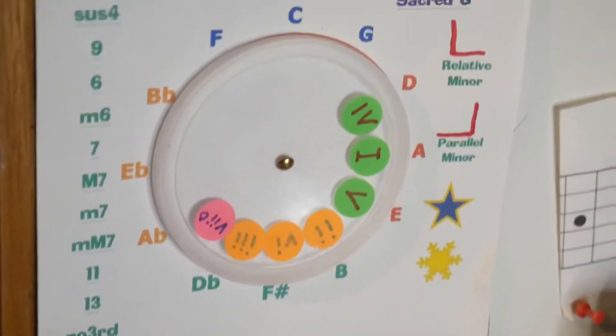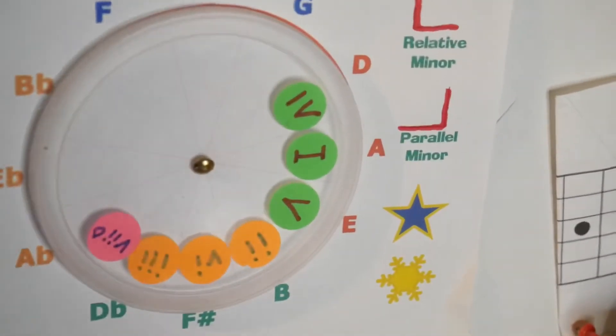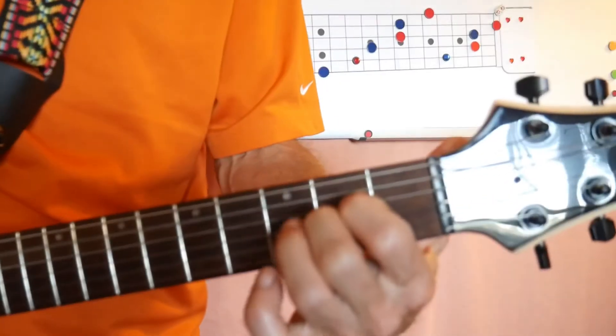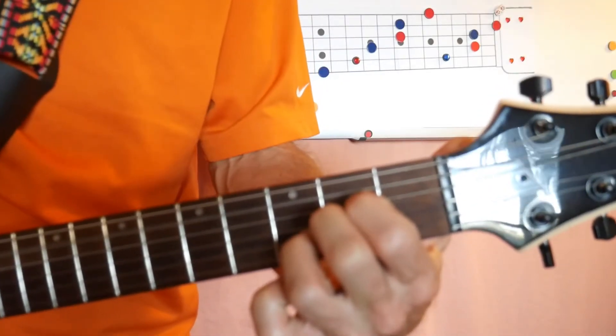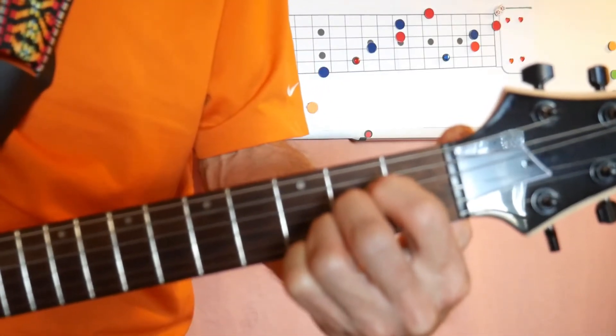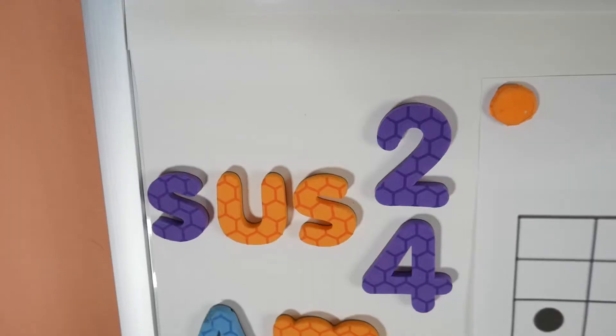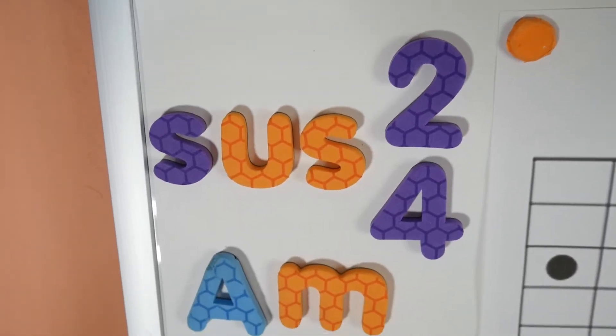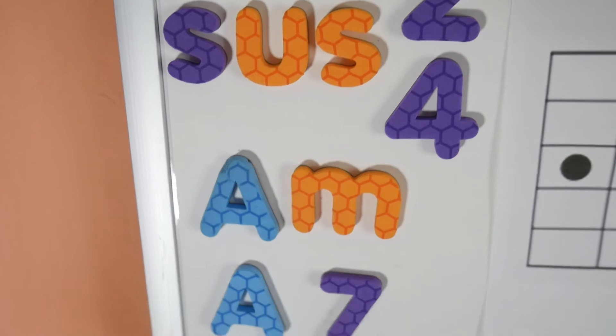Chords, you can riff chord jams over top of the power chords. You can play lots of different sounds over top of the power chord and it sounds good. You can play Asus 2, Asus 4, A minor.